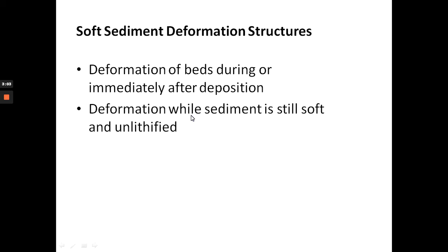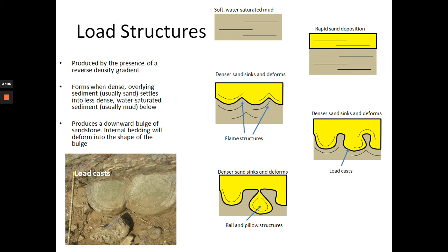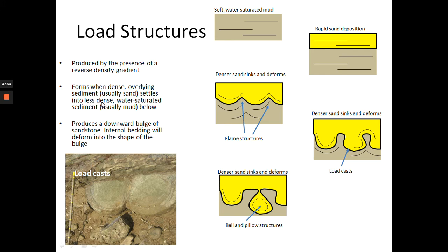These are deformations of beds during or immediately after deposition, while sediment is still soft and unlithified. One of the most common types — especially relevant for deltaic deposits — are load structures. These are deformations produced by the presence of a reverse density gradient: dense overlying sediment, usually sand, settles into less dense water-saturated sediment, producing a downward bulge of sandstone with internal bedding deforming into the shape of the bulge.